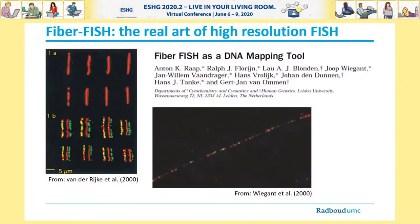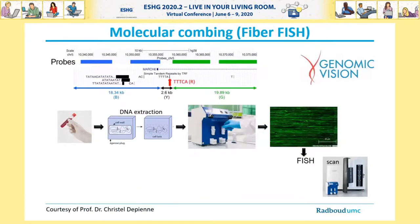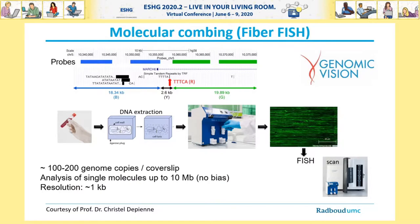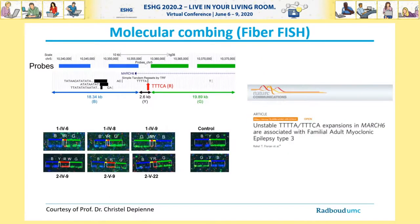One method that boosted the resolution of classical cytogenetic tools and allowed access to very complicated regions of the human genome is FiberFISH. This is a non-trivial technology that was only mastered by a few groups around the globe, including the laboratory in Leiden. The method of FiberFISH is also known as molecular combing and has now been industrialized by a company called Genomic Vision. This enables the simultaneous study of one to 200 genome copies per cover slip, and allows the study of single molecules up to 10 megabases in size, with a resolution of roughly one kilobase pair.